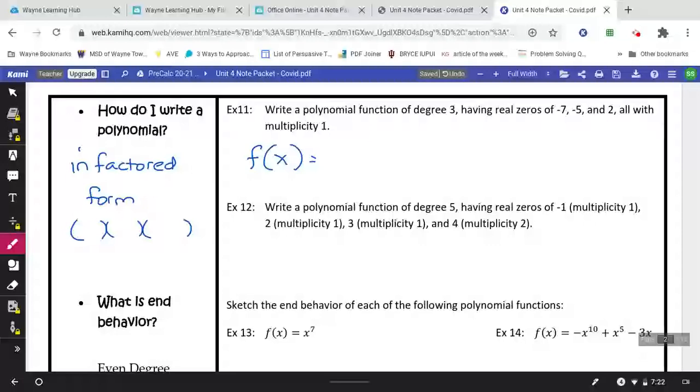Example 11, write a polynomial function of degree 3. The degree 3 is just going to make sure that we have three things at the end, or at least three x's represented. Here's my real zeros. I've got negative 7, negative 5, and positive 2. Remember, when we were pulling those numbers out of the equation, we were changing the sign. So when we put them back in, we're going to have to do the opposite, change the sign back. So x plus 7, change the sign x plus 5, change the sign x minus 2.